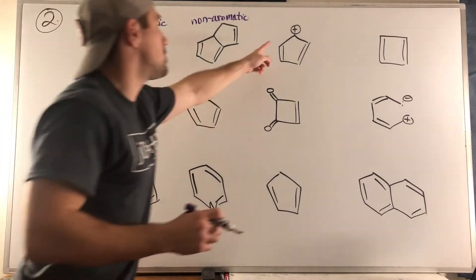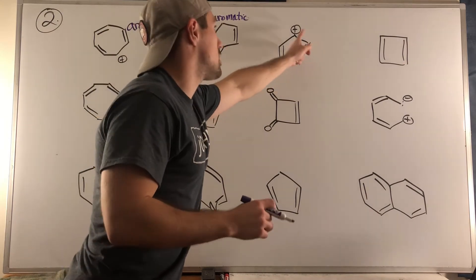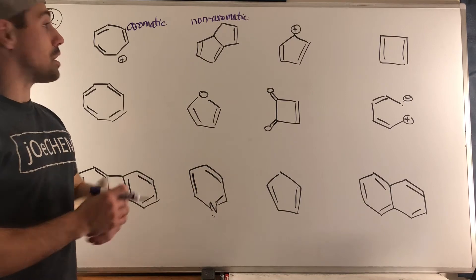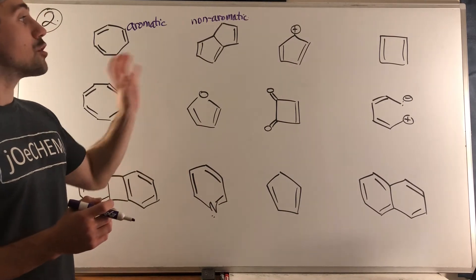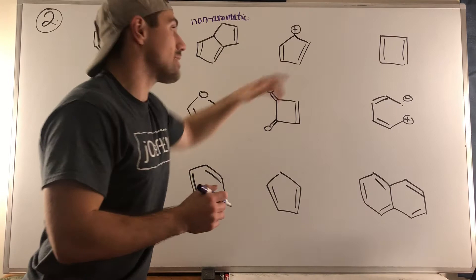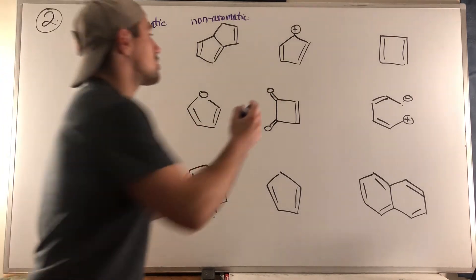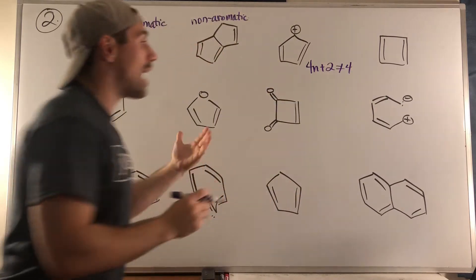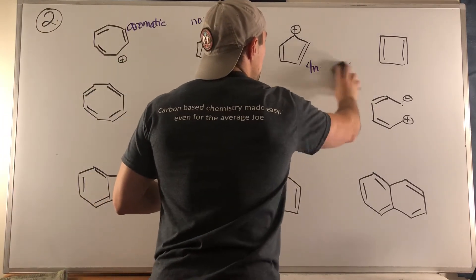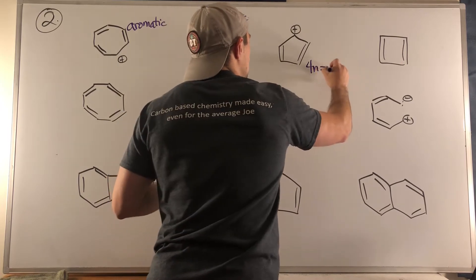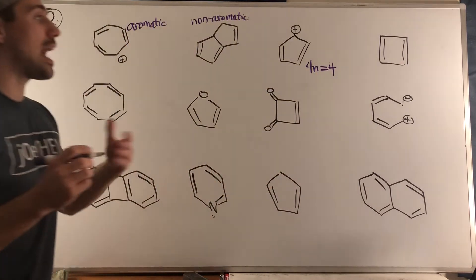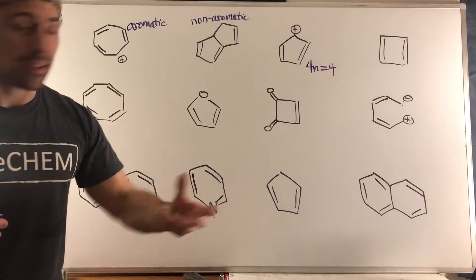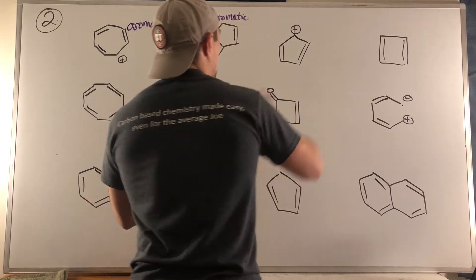Moving right along, we have a ring, it's conjugated because sp2, sp2, sp2, sp2, sp2, sp2. We have all the p orbitals next door to one another, we are flat. In terms of Huckel's rule we have four pi electrons. That's not 4n plus 2, that's actually 4n because n could be 1. This structure is almost aromatic but in fact it is anti-aromatic.